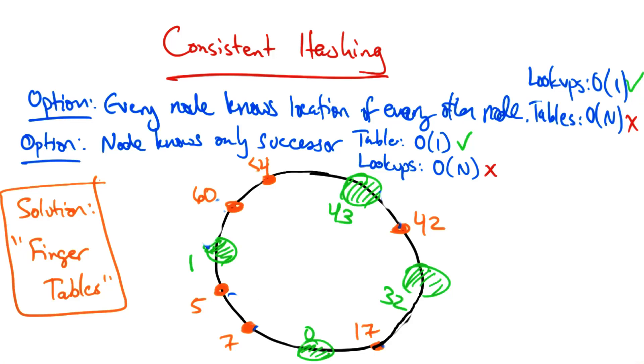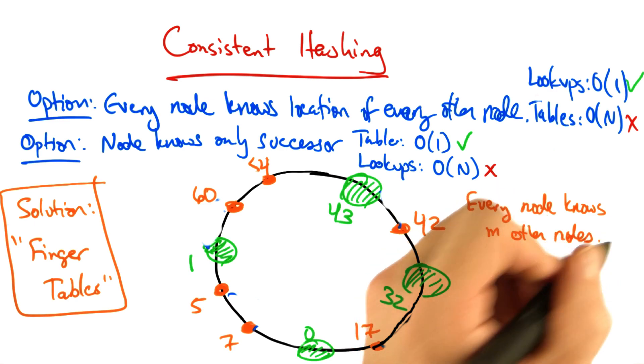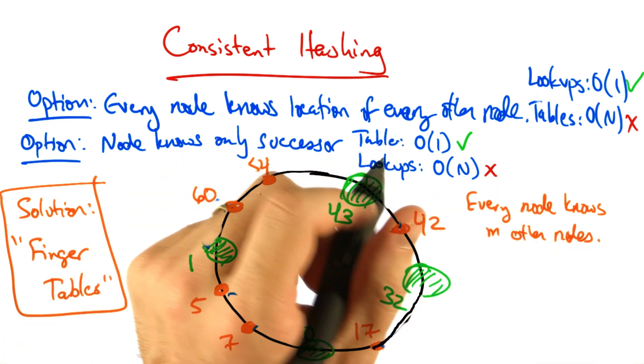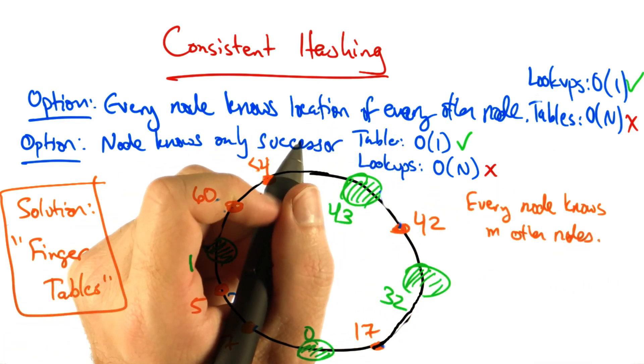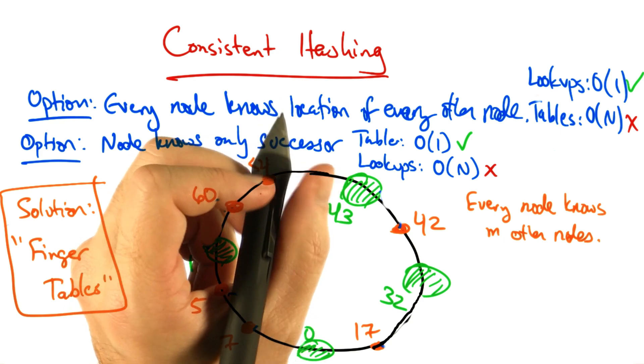A solution that provides the best of both worlds is called finger tables, where every node knows m other nodes in the ring. And the distance of the nodes that it knows increases exponentially.